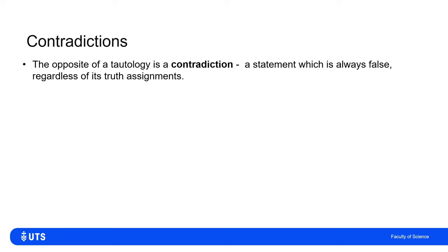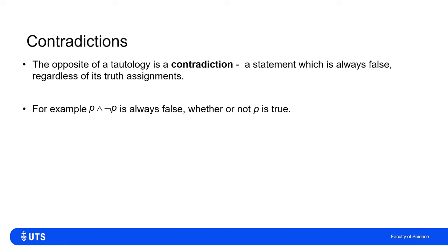The opposite of something tautological is something contradictory. We say a statement is a contradiction if it is always false, regardless of the inputs. For example, P and not P is always false. There is no statement which can be simultaneously true and false — because if it's true, then it's not false, and if it's false, then it's not true. So it's definitely not true and false simultaneously.